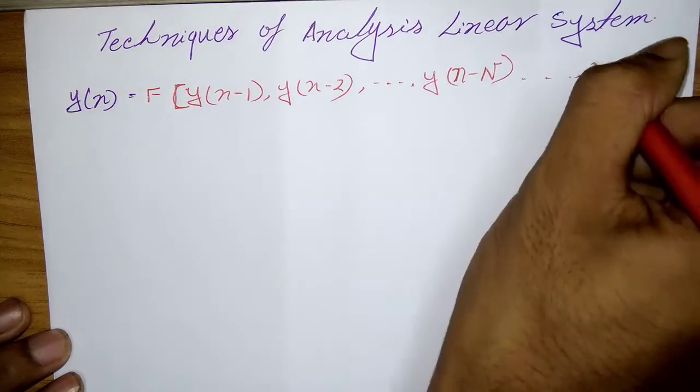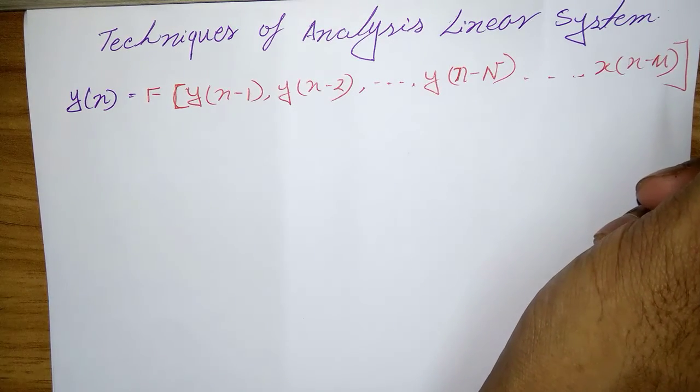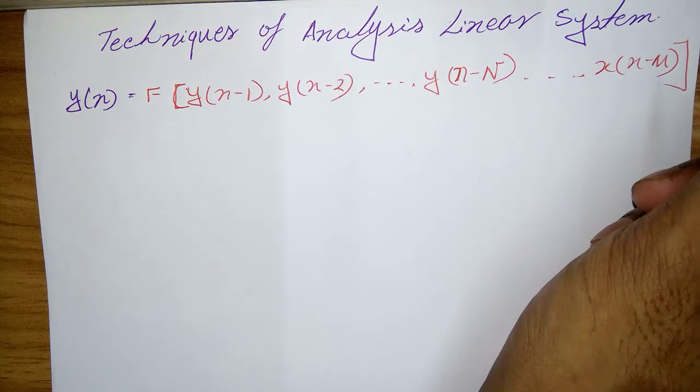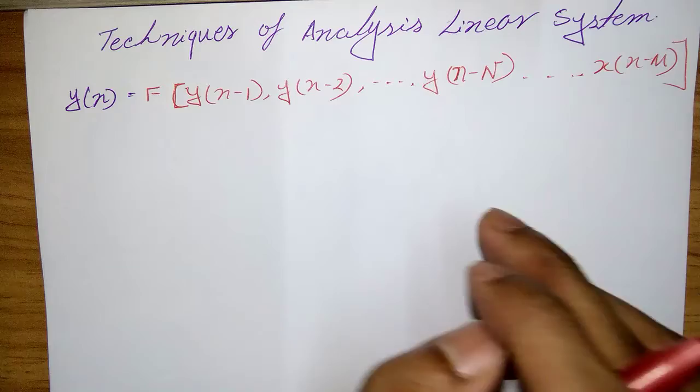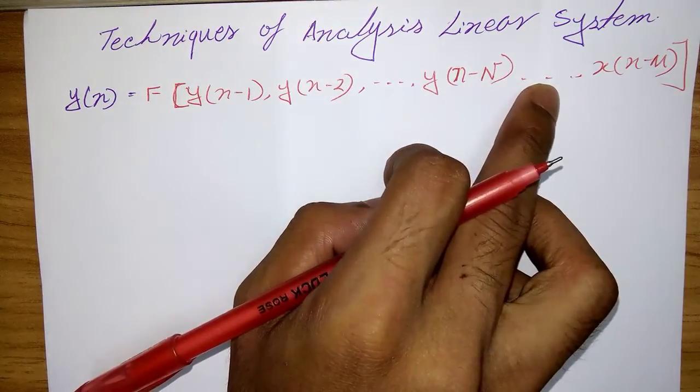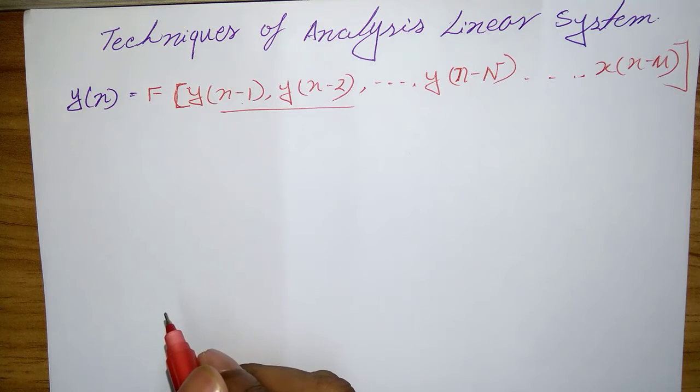Especially for an LTI system, we shall see that the general form of input and output relationship is where f of this function denotes some function of the quantities in bracket.